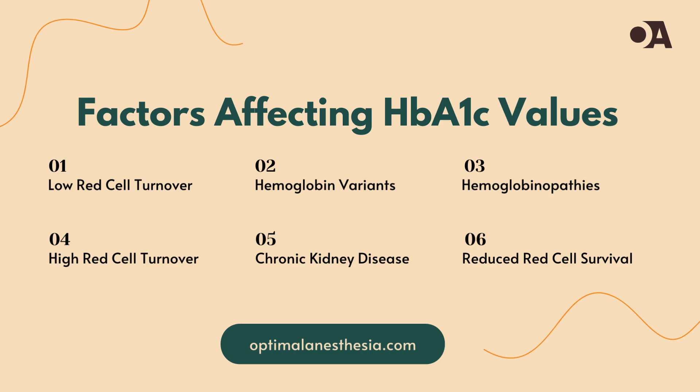Red blood cells have a lifespan of about 120 days, and their turnover rate can affect HbA1c values. If turnover is slow, we see more old red cells with attached glucose, leading to falsely high HbA1c values — common in patients with vitamin B12 or folate deficiency anemia. If turnover is rapid, it results in more young red cells with less attached glucose, producing falsely low HbA1c values. Conditions like chronic hemolysis, or treatment for iron, vitamin B12, or folate deficiency, and erythropoietin treatment can cause this.